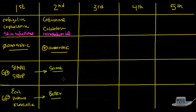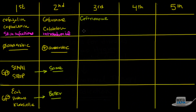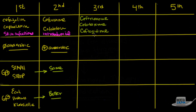Third generation cephalosporins have three major examples you should know: ceftriaxone, cefotaxime, and the very important ceftazidime. We'll talk about ceftazidime specifically in a moment.